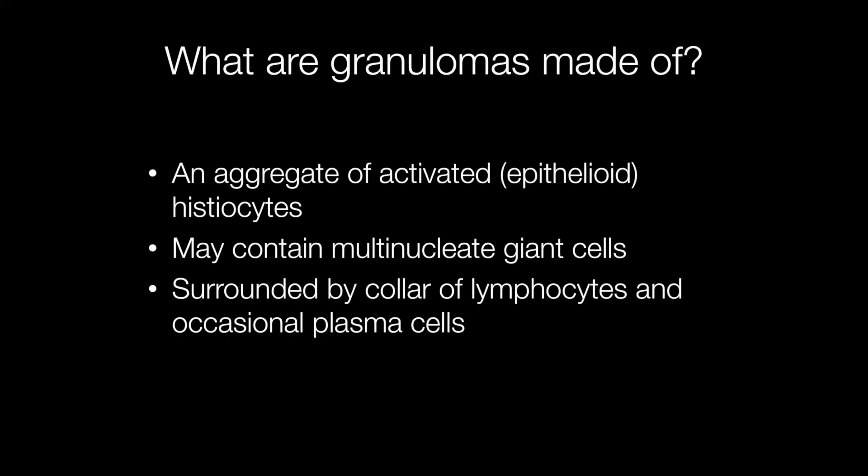Granulomas are made up of a mixture of cells. There are activated histiocytes, known as epithelioid cells because of their resemblance to epithelial cells. Granulomas may contain multinucleate giant cells, and there is usually a cuff of lymphocytes and occasionally plasma cells around the granulomas.